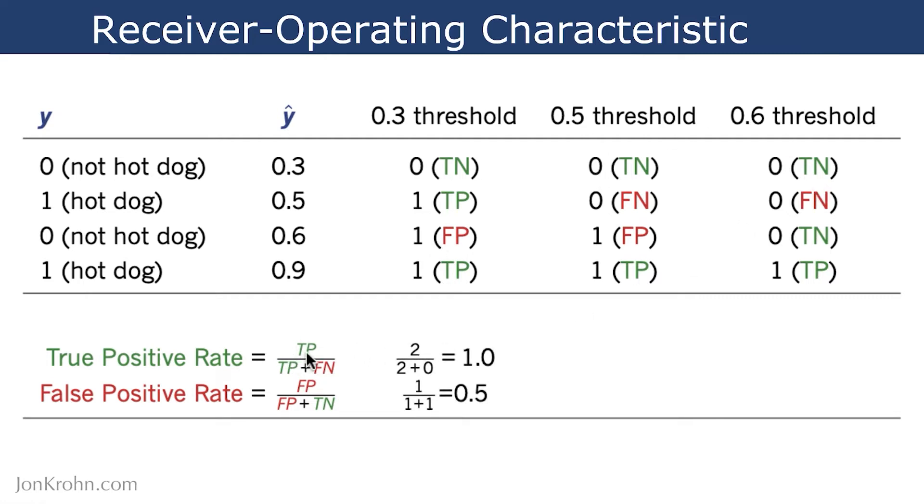we follow this relatively simple formula. The true positive rate is number of true positives divided by true positives plus false negatives. So in this column, we have two true positives. We put that in the numerator. And in the denominator, it's still two because we don't have any false negatives at this point. So 2 divided by 2 gives us a true positive rate of 1 at this 0.3 threshold.